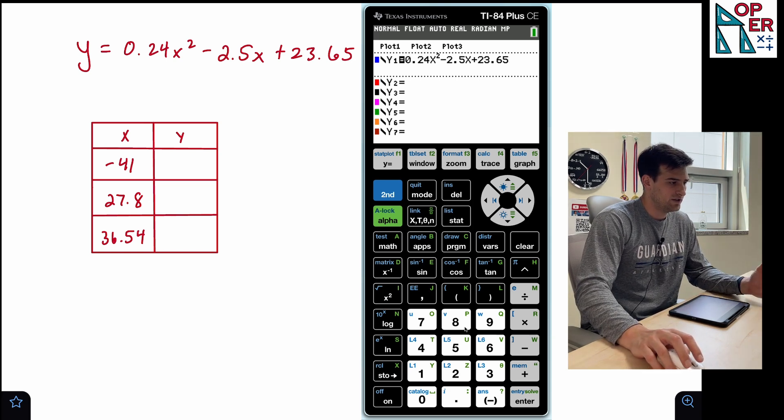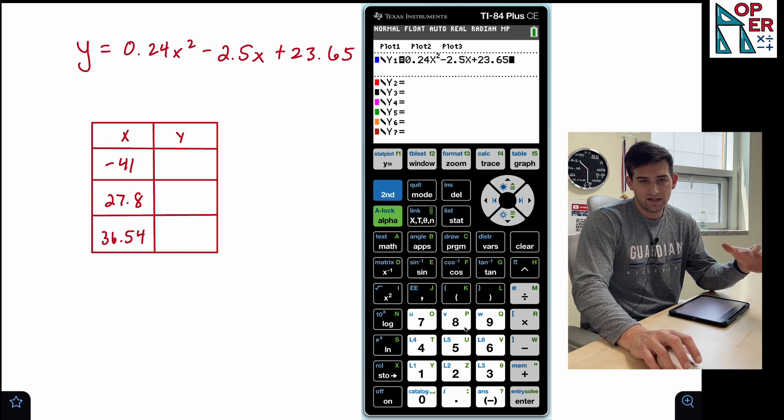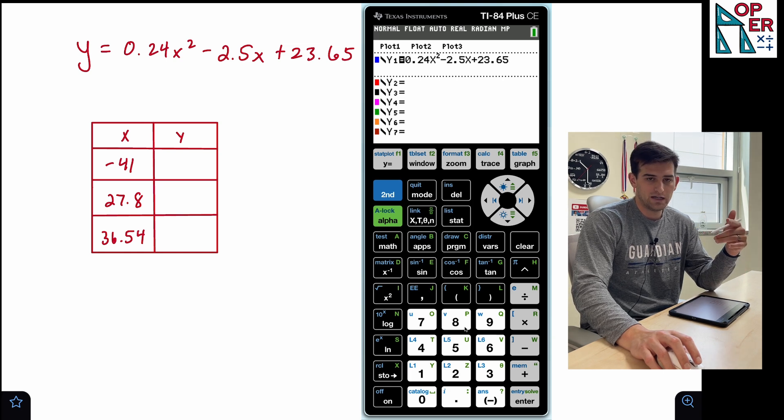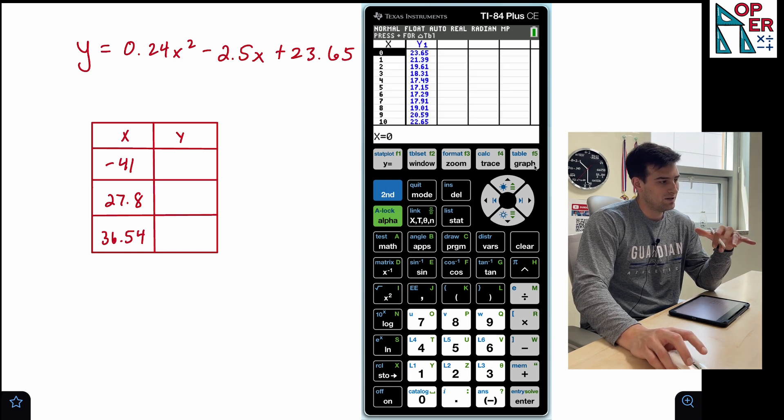So I made a previous video about how to get to the table of values, how to adjust the table of values, like the starting value and your increments in the table. So I'll link that in the cards right now. But for this video, let's go ahead and hit second table.